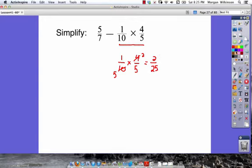Let's go ahead and rewrite. We now have a problem of 5 sevenths minus 2 twenty-fifths. And what we need to do now is figure out what our least common denominator is going to be. Remember, the least common denominator is going to be our least common multiple of our two denominators.